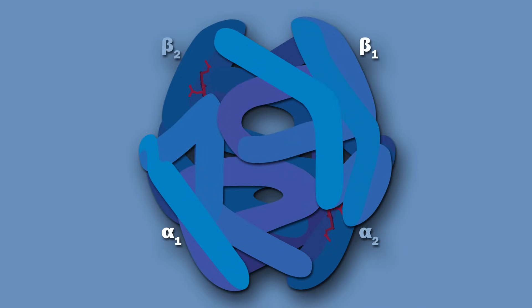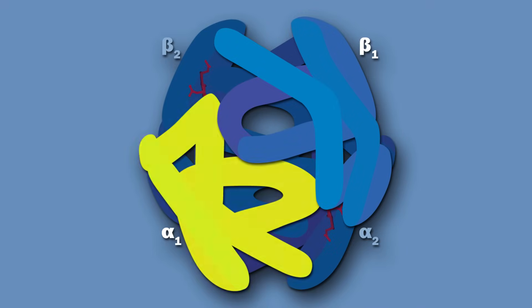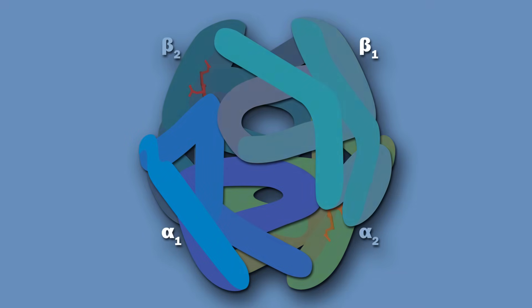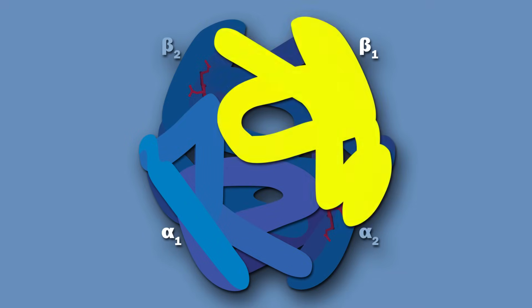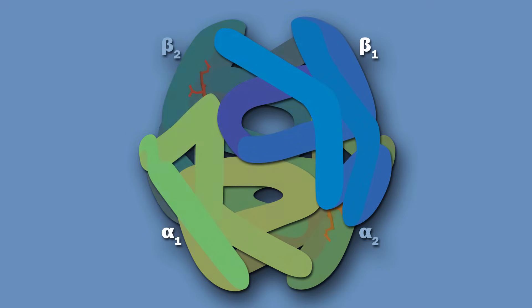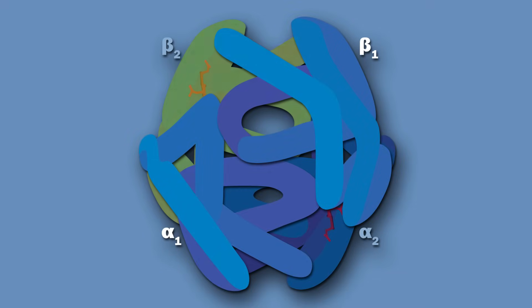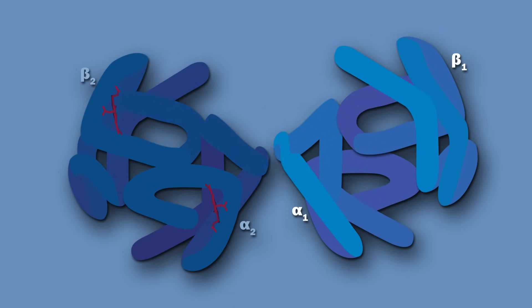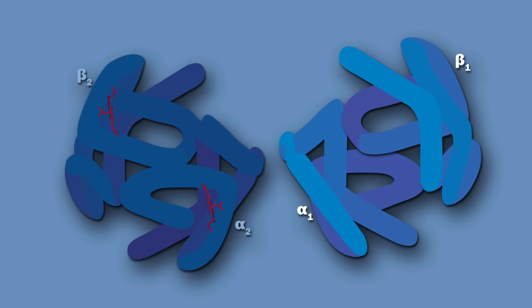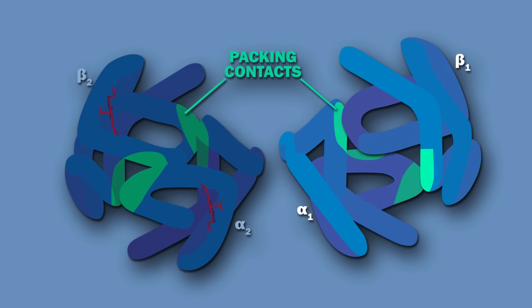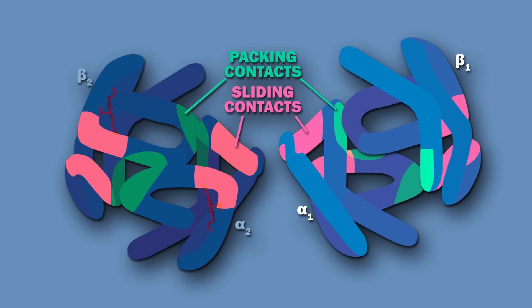Subunits interact mostly with dissimilar chains. In other words, alpha subunits interact with beta subunits but not other alpha subunits, and beta subunits interact with alpha subunits but not other beta subunits. There are two types of contacts between the two dimeric halves of hemoglobin: packing contacts and sliding contacts. Packing contacts do not shift during the conformational changes that occur after oxygen binding, while sliding contacts do.